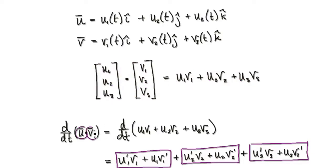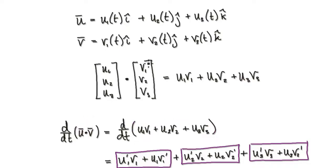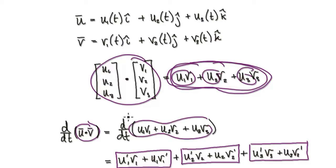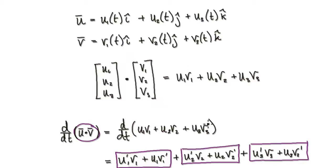So differentiating the dot product of two vectors is the same as differentiating this expression here, because the dot product boils down to adding up those component products. So differentiating these two vectors' dot product is the same as differentiating those three component terms.